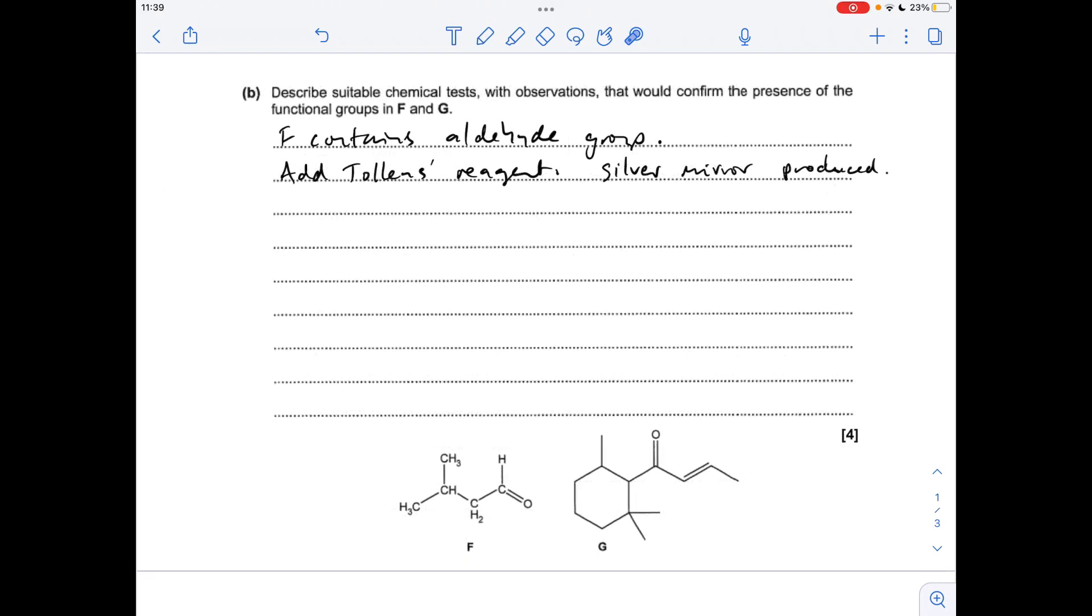Moving on to part B, confirming the functional groups in F and G. So F, there's only one functional group, it's the aldehyde functional group, so all we need to do is add Tollens reagent, and you'd expect to see a silver mirror.